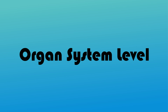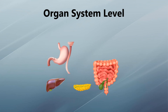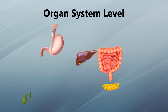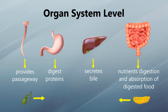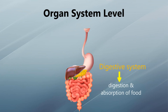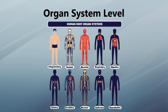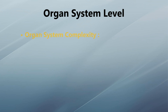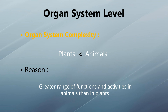At the organ system level, different organs performing related functions are organized together in the form of an organ system. Each organ carries out its specific function, and the functions of all organs appear as the function of the organ system. Examples include the integumentary, skeletal, muscular, respiratory, digestive, urinary, circulatory, nervous, endocrine, and reproductive systems. The organ system level is less complex in plants compared to animals, due to a greater range of functions and activities in animals.